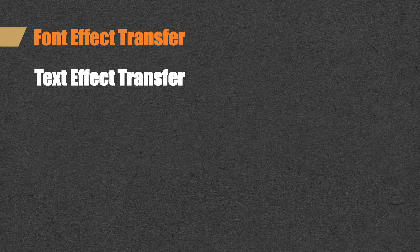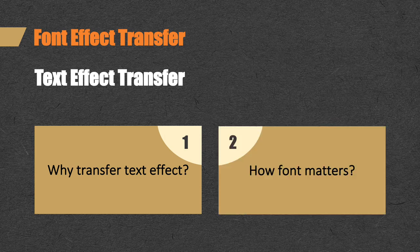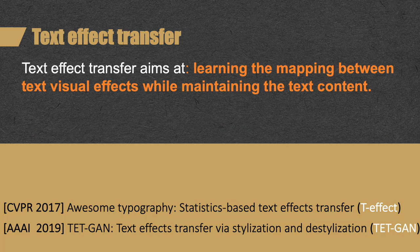We have two questions. The first: why do we need to transfer text effects? In the work called TEffect from CVPR 2017, the author defined text effect transfer as learning the mapping between text visual effects while maintaining text content. This is a common task in design, but it is tedious and repetitive to apply text effects to all characters manually — especially when the character set is very large, such as Chinese or Japanese.